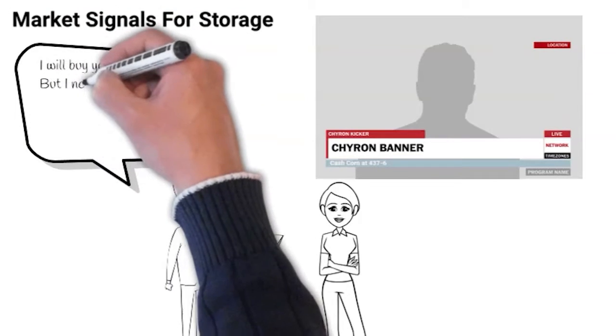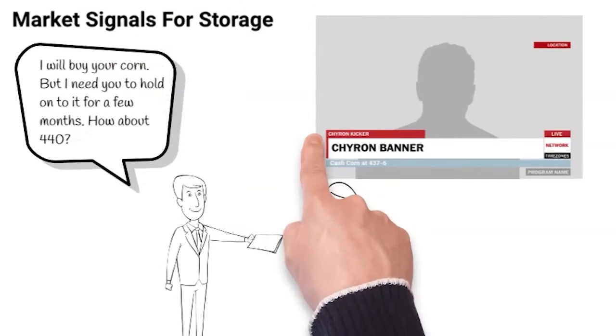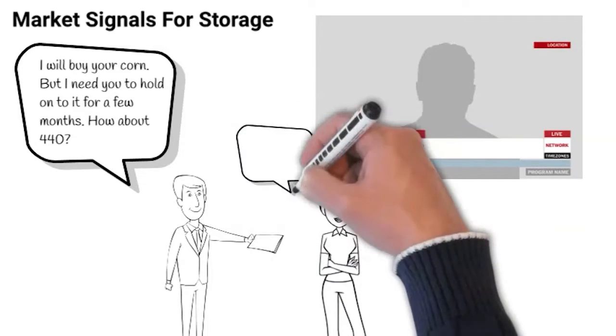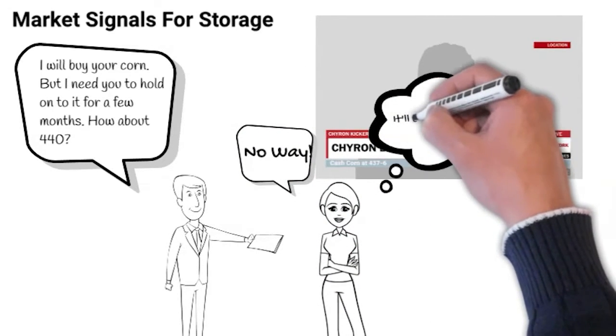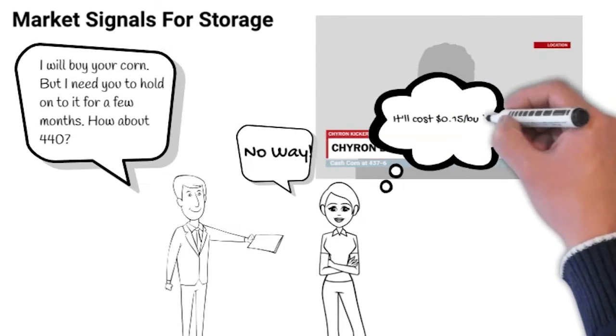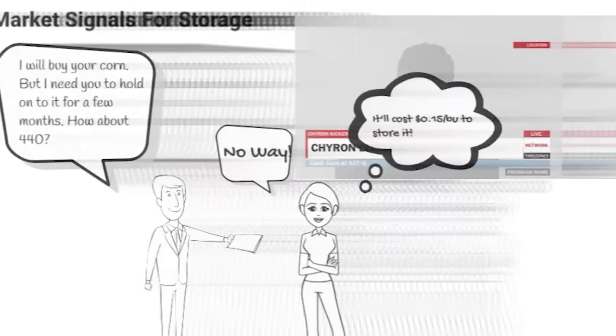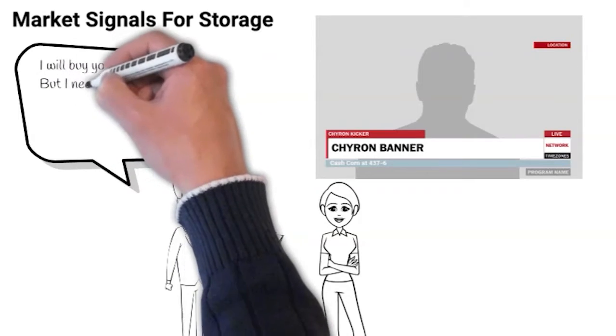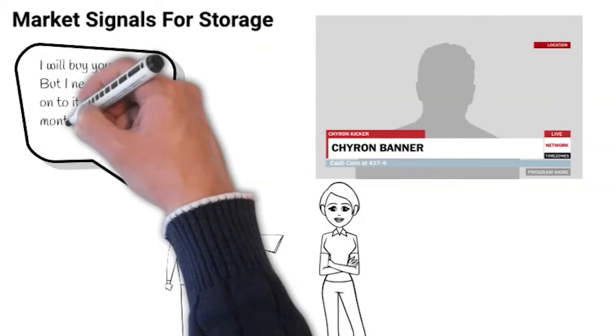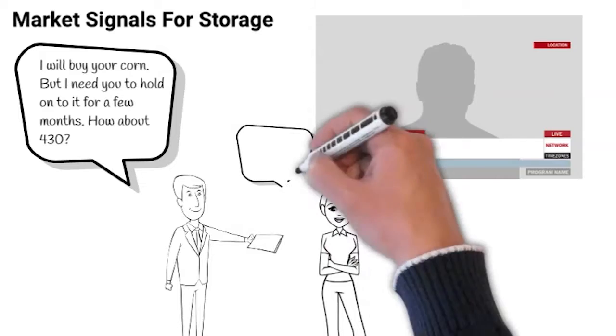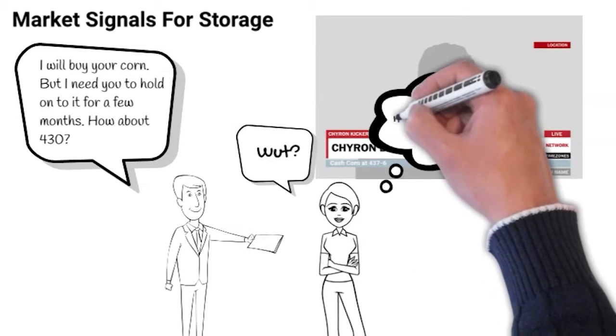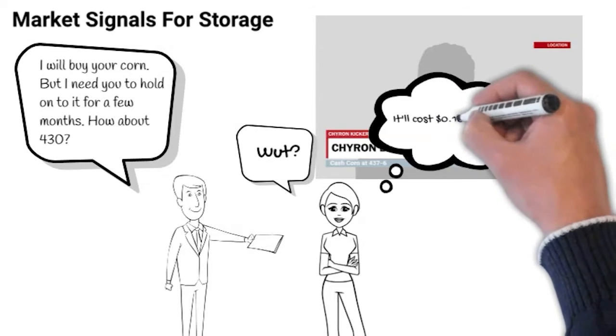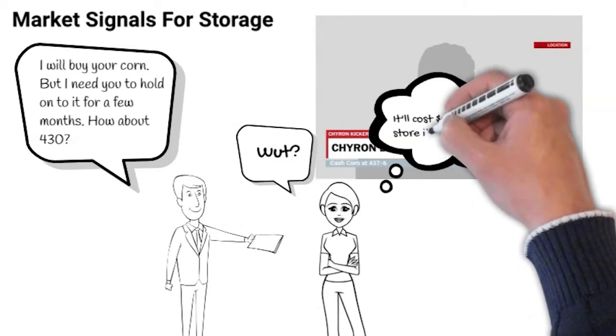Let's reset with a slightly different scenario. This time, they are only willing to offer you $4.40 a bushel. No, that's not going to cover your storage costs. Finally, it can get worse. What if they were only willing to offer you $4.30 a bushel? That is an inverted market, and that is definitely a signal to sell cash grain now.